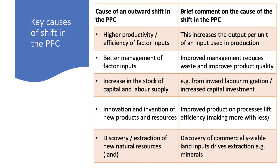Here are the key causes of a shift in the PPC. If there is an increase in the stock of land, labour, or capital, or an increase in the productivity of these factors, then the PPC can shift outwards, enabling a better trade-off. So higher productivity is important — output per worker, better management of factor inputs — partly to reduce waste and also to improve the quality of output, as well as an increase in the stock of capital from investment.